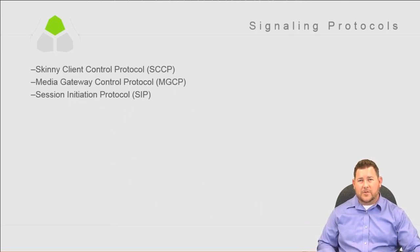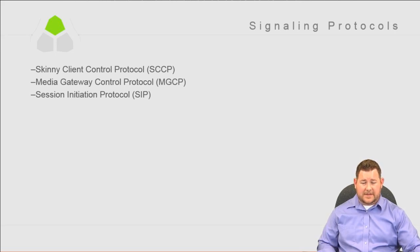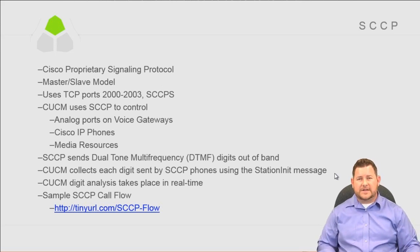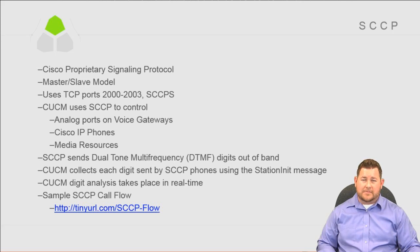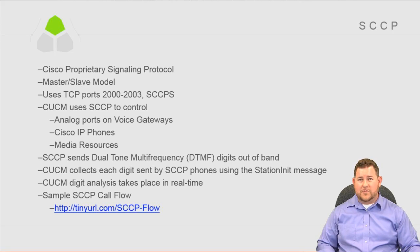Now that codecs and media protocols are covered, let's talk about the actual signaling protocols — how media streams get set up and how codecs get selected. The first is Skinny Client Control Protocol, which is SCCP. It is a Cisco proprietary signaling protocol that's been around for a long time and was the default protocol on phones. The newer 8971s and 9971s, the 8900 and 9900 series phones, now use SIP exclusively, but Skinny is still all over the UC network.